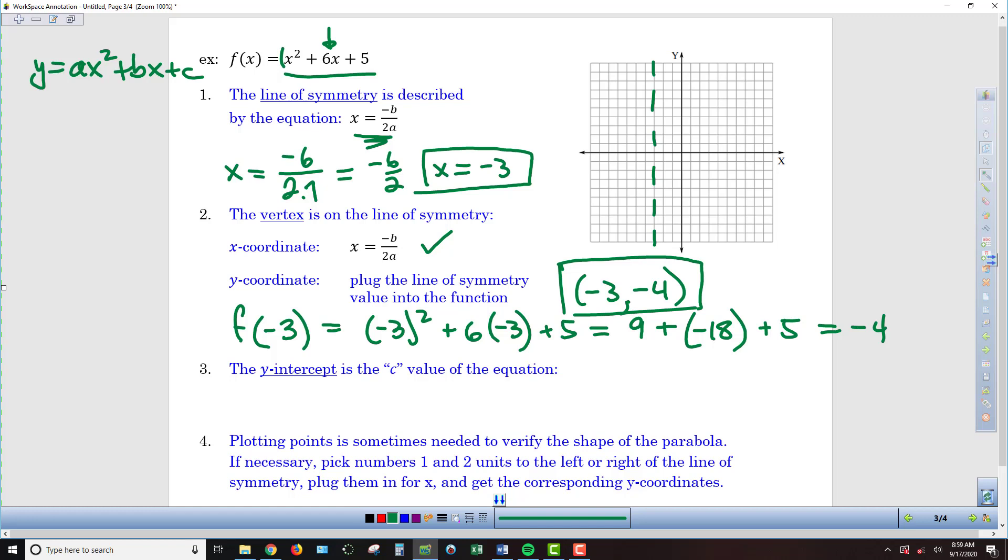Now we can move to our graph. We've already got the x-coordinate marked out with that line of symmetry. So I'm going to go down 1, 2, 3, 4, and I'm going to put in a dot right there. There's our vertex.